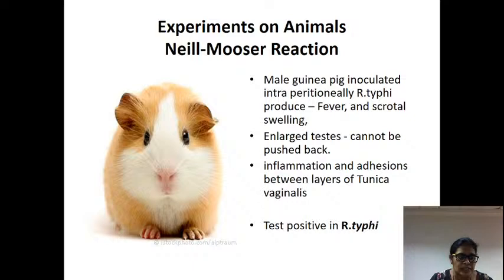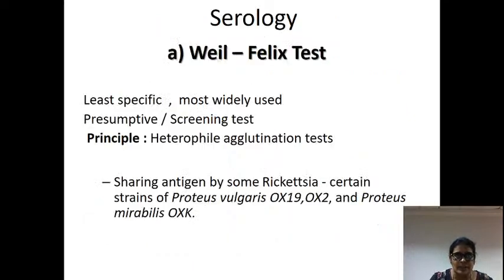For culture: these cannot be grown on normal media; we need tissue cultures or egg yolk cells. Tissue culture and experimental animals can be used. If inoculated into mice intraperitoneally, in Rickettsia rickettsii causing spotted fevers you will see cold fever with scrotal necrosis in the rat. In R. typhi, conorii, and akari you will see tunica reaction. Neill-Mooser reaction is positive in Rickettsia typhi — when a guinea pig is inoculated intraperitoneally and there is fever, scrotal swelling, and the testes cannot be pushed back, it is due to inflammation of the tunica vaginalis.